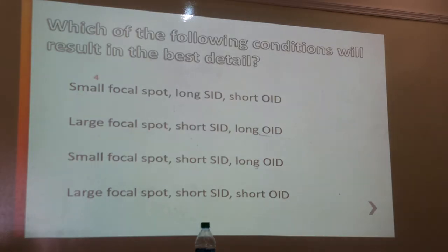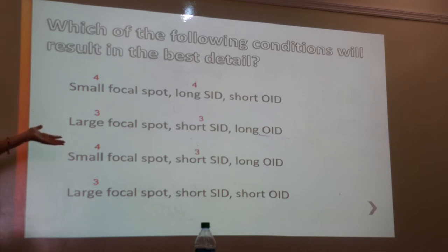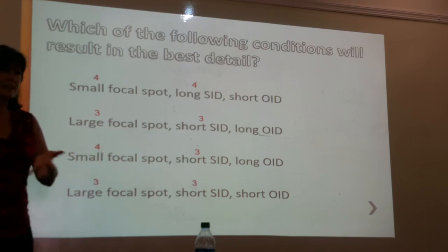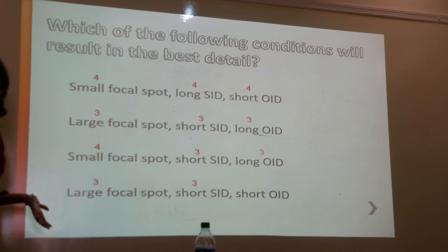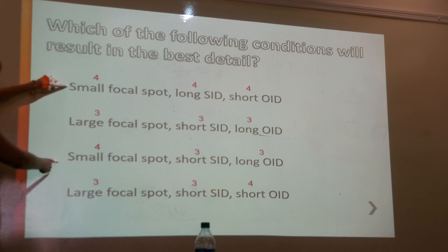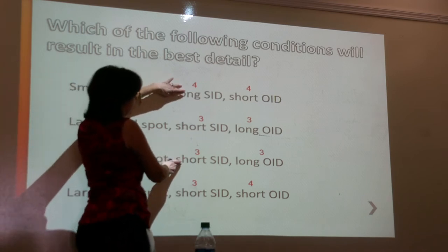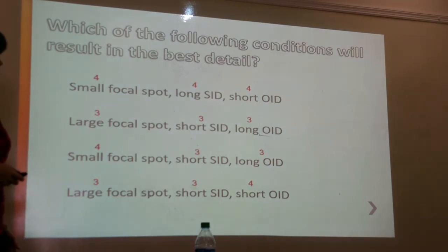So for best detail: small focal spot, long SID, short OID. I assign higher numbers to small focal spot and long SID when working through these problems, staying consistent. Whether the question asks for more or less detail, I apply the same approach. Small focal spot size gives best detail.